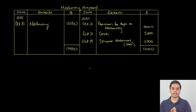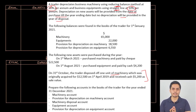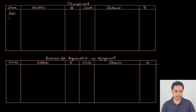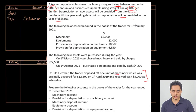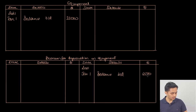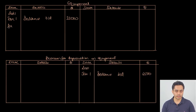Now let's do the equipment account and provision for depreciation on equipment account. In the equipment account there is no disposal — only opening balances and new purchases. Equipment opening balance is 22,000 on the debit side: 2021, January 1, balance brought down, 22,000. On the credit side of the provision for depreciation account, January 1, balance brought down, 6,550. A new asset was purchased on 1st August 2021 for 4,200, paid by cash. On the debit side of the equipment account, August 1: cash, 4,200.